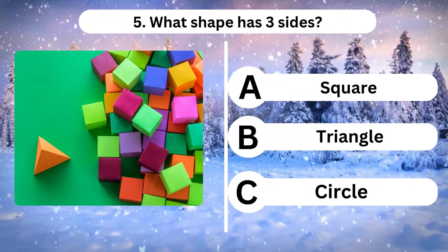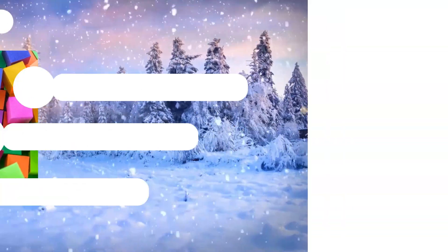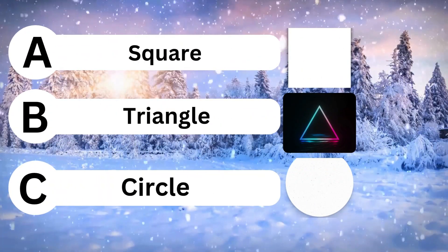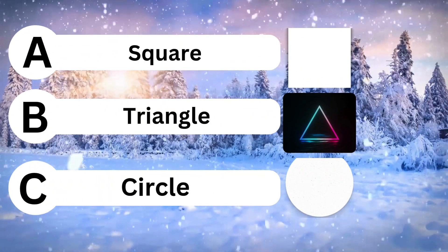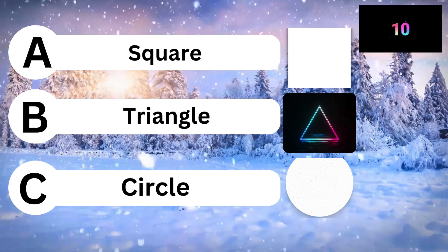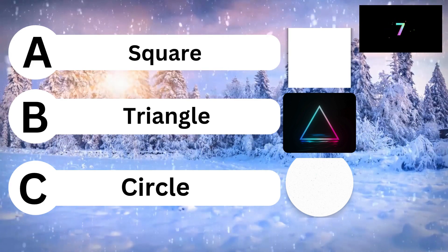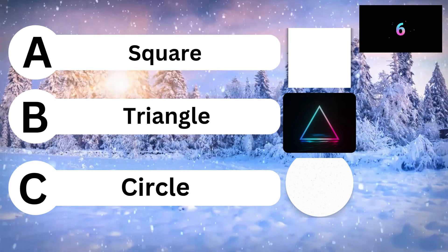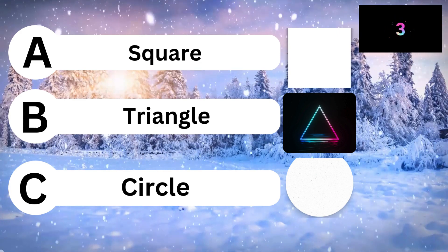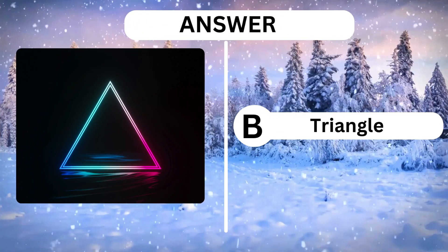Question 5. What shape has 3 sides? A. Square. B. 3. Answer is B.